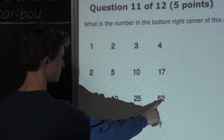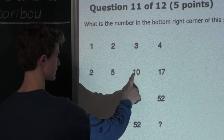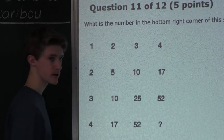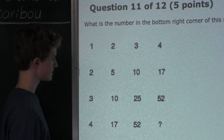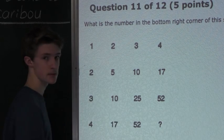And for 52, that would be 25 plus 17, which is 42, plus 10 is 52, which we have here. So, we know that that rule is consistent, and therefore, we can apply it to find this number in the bottom right.